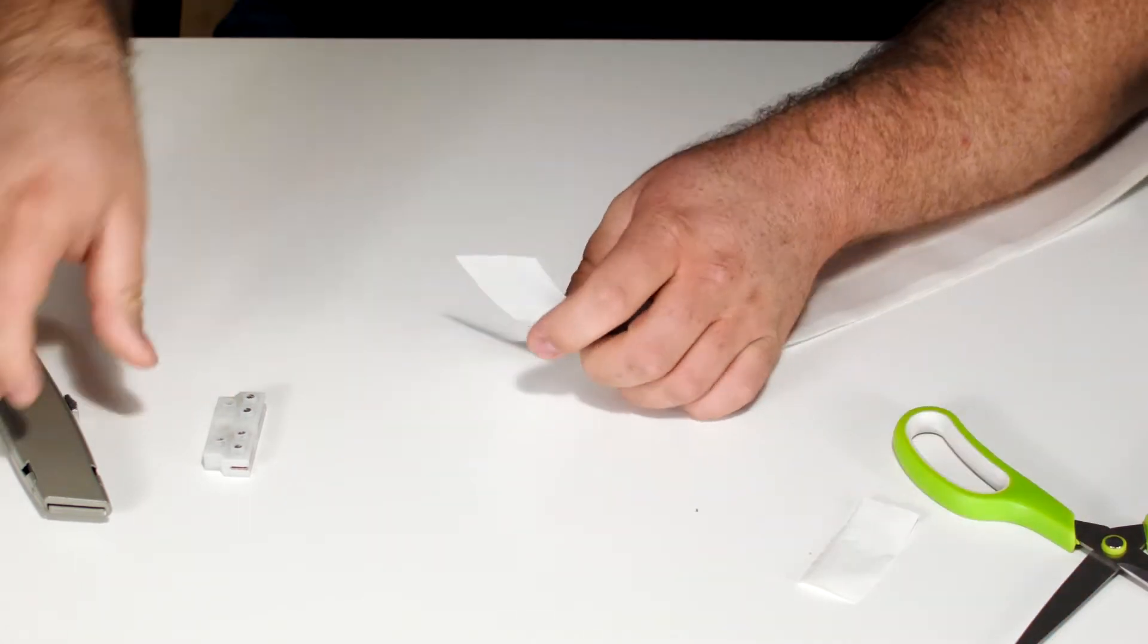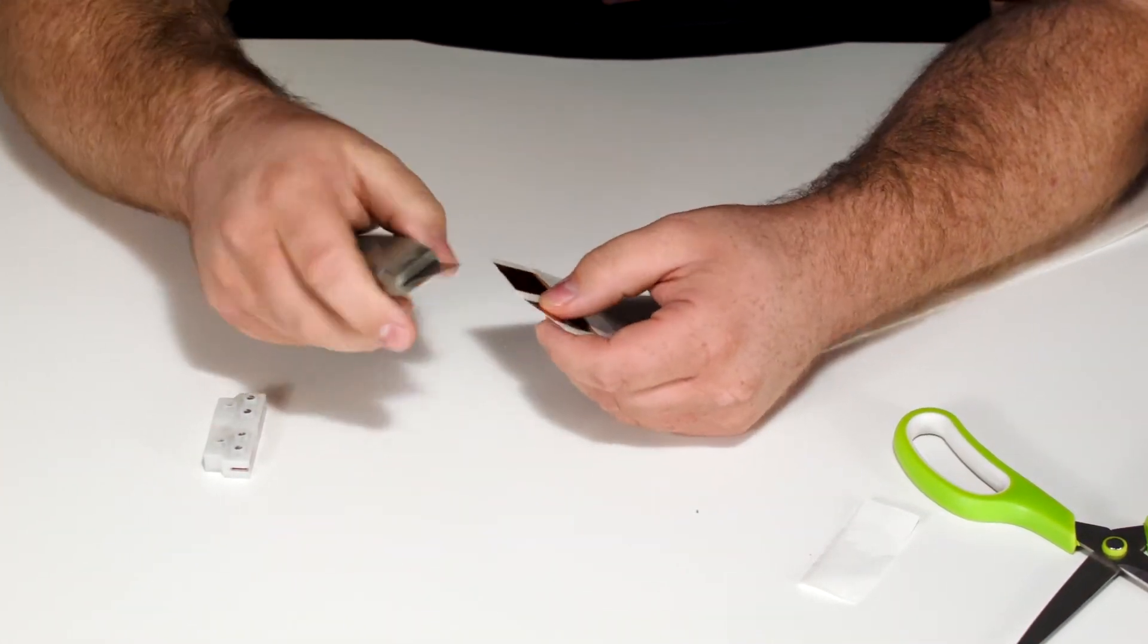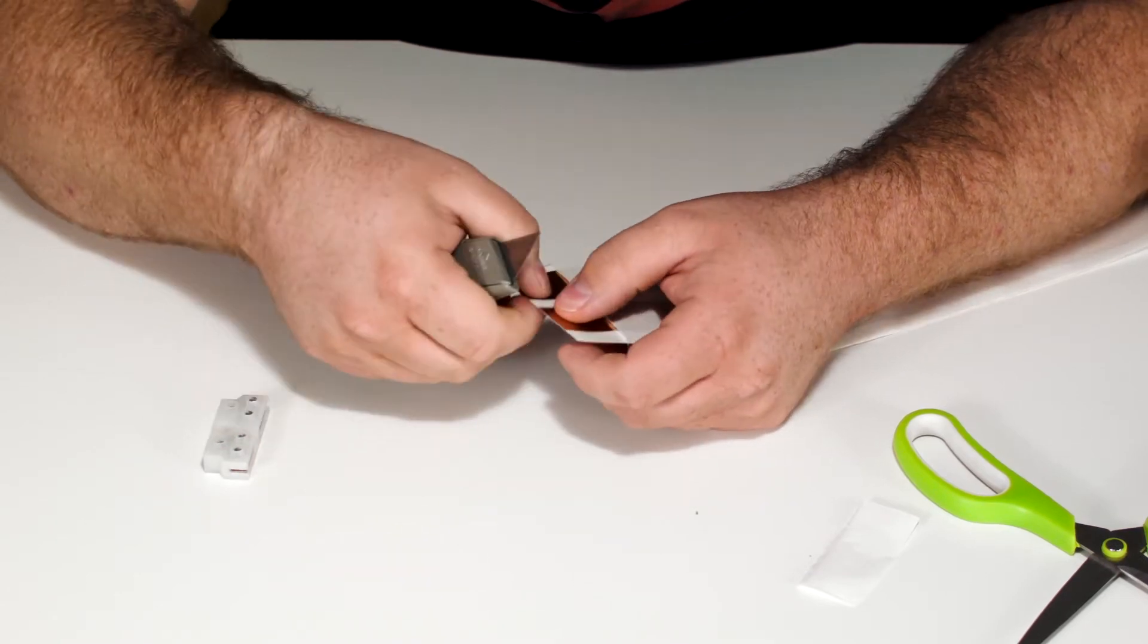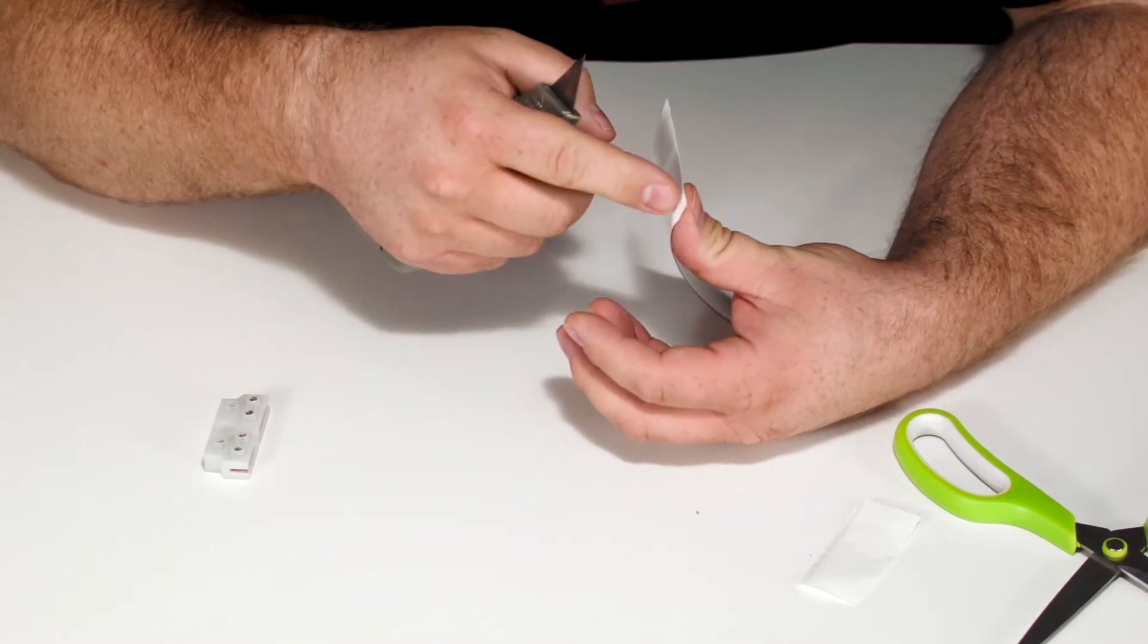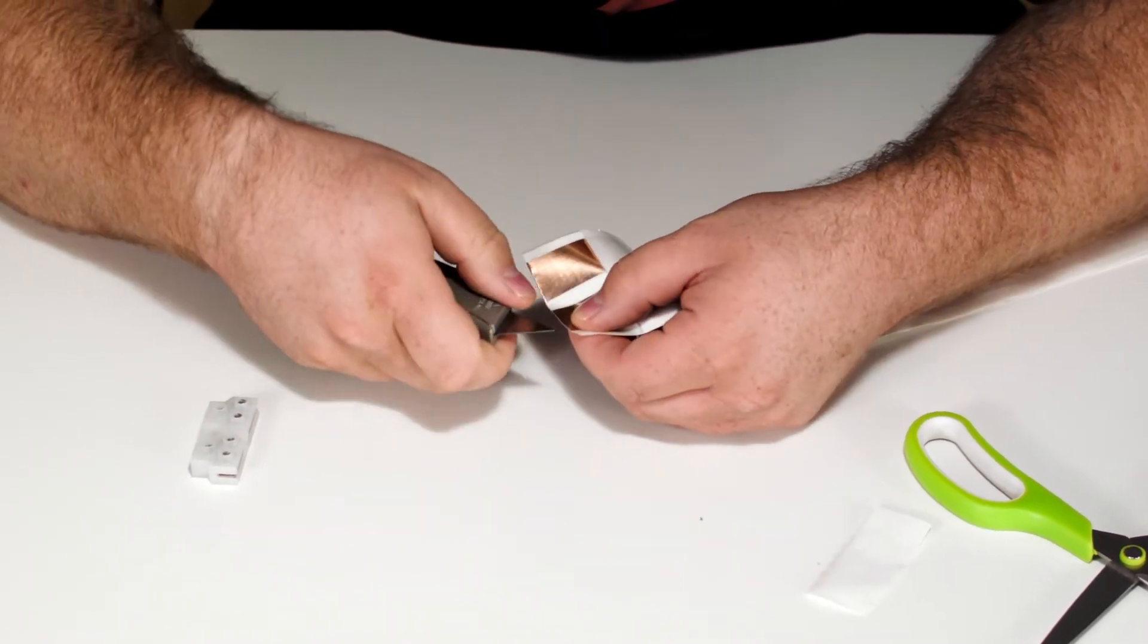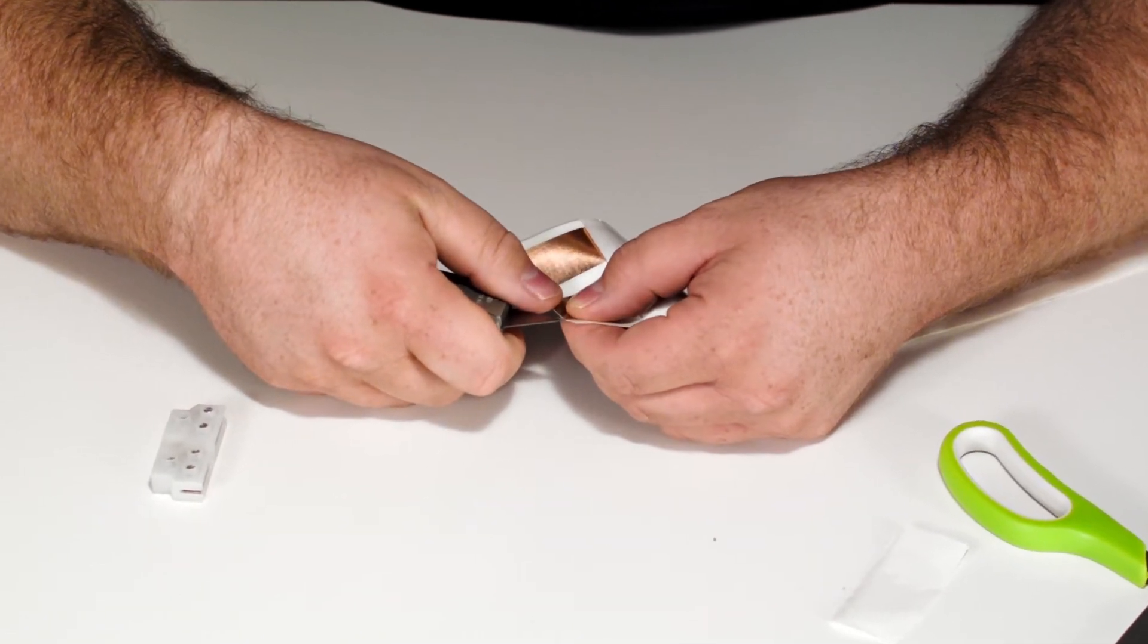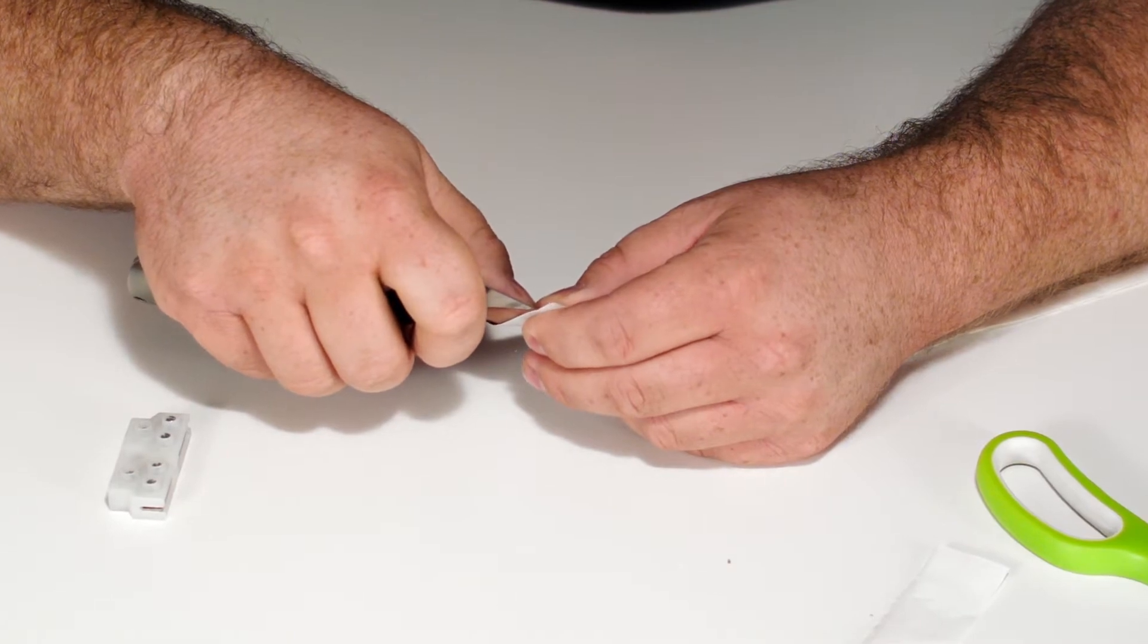Then you've got to get in there and separate the two adhesive layers. There's adhesive that would hold it to the wall, and on the other side there's the adhesive that holds on the flat layer. I think it's easiest if you get in with a blade and you can very carefully start to separate the copper from the backing.